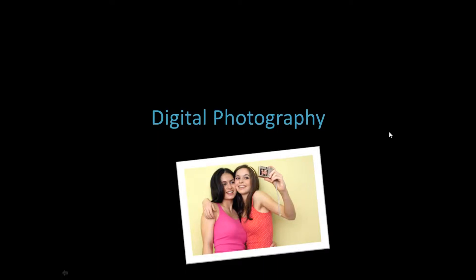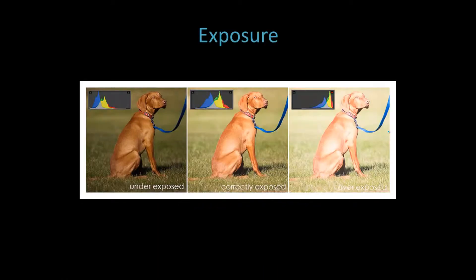In photography we talk about the exposure of an image — what we are talking about is the amount of light that the sensor is exposed to. This middle image is what a camera is trying to achieve: an even little bell curve of light. This graph shows how many pixels are at various tonal ranges, so how many bright or dark pixels. In this image most are in the middle, not too bright and not too dark. If you over-expose an image most pixels will be in the high tonal range, and if you under-expose most will be in the dark tonal range.